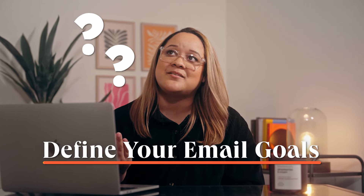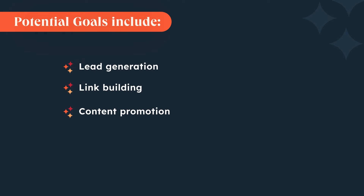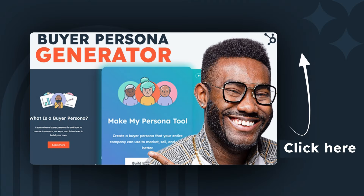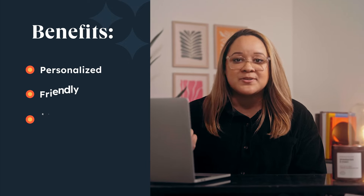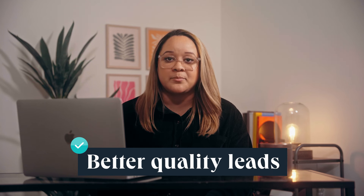So what do I want to achieve with my email? Potential email goals include lead generation, link building, content promotion, influencer collaborations, and pitching products and services. I want to pitch candles to my local shops whose customers align with my brand. I've already done my prospecting, choosing who I'll target based on my buyer persona. This helps craft an email that's personalized, relevant, and offers value. I'll get better open rates and better quality leads by sending only to prospects who want or need what I have to offer — because any email that doesn't offer clear value or targets the wrong person is spam.